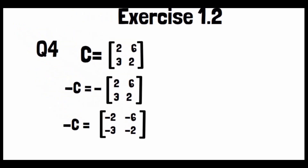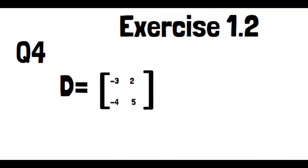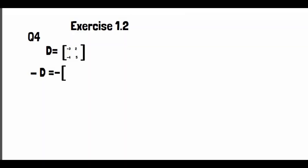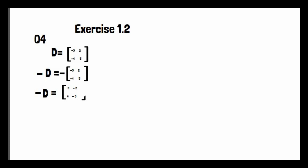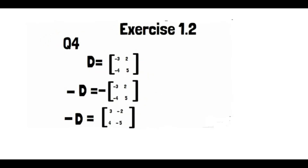Matrix D: D is equal to [-3, 2; -4, 5]. The negative minus D is found by changing all signs: -3 becomes 3, 2 becomes -2, -4 becomes 4, and 5 becomes -5. So minus D equals [3, -2; 4, -5]. This completes part D of Question 4.